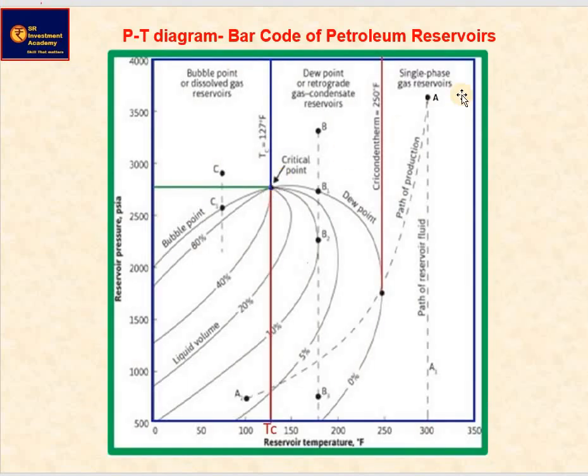Here P-T diagram helps in explanation of a particular petroleum reservoir and its fluid. The bubble point curve is defined as the line separating the liquid phase region from the two-phase region. Similarly, the dew point curve is defined as the line separating the gas phase region from the two-phase region.